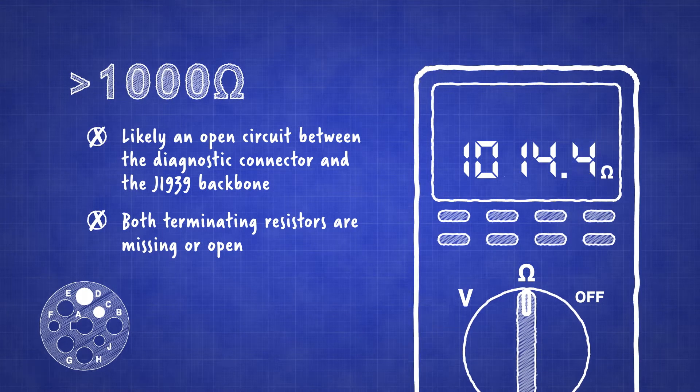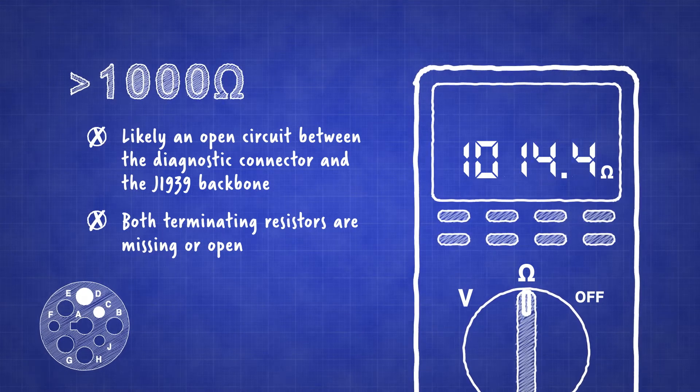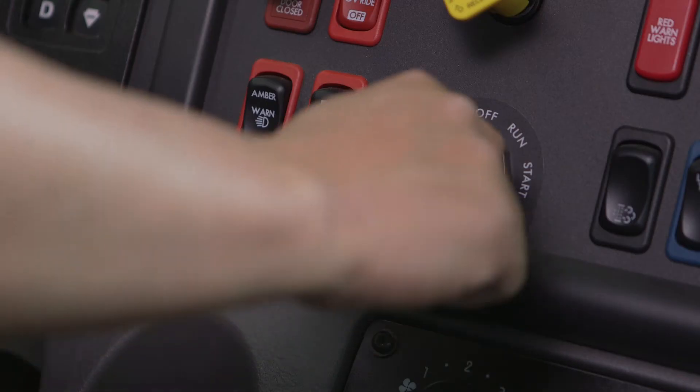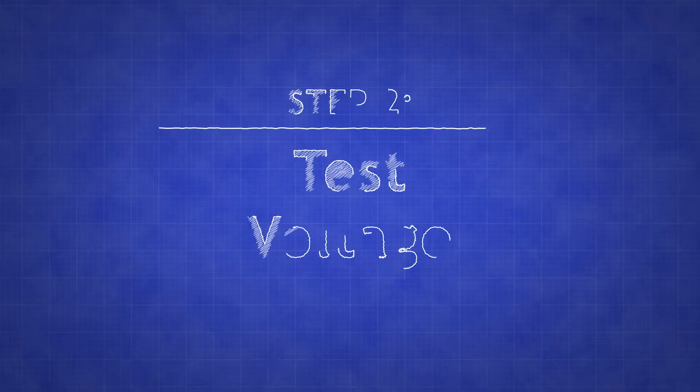If any incorrect reading is discovered, then that problem must be repaired prior to continuing the test. Reconnect the batteries and turn the ignition switch on to test other components of the Datalink.